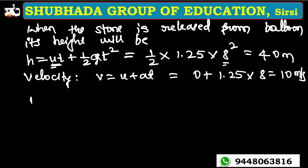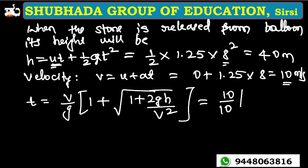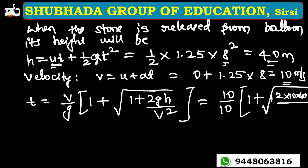Using the formula for time to reach the ground: t equals v divided by g into (1 plus square root of 1 plus 2gh divided by v squared). Substituting v equal to 10, g equal to 10, and h equal to 40: t equals 10 divided by 10 into (1 plus square root of 1 plus 2 into 10 into 40 divided by 10 squared).